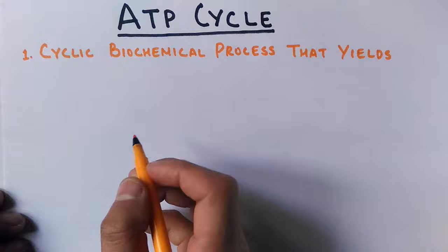Let's find out in this video. So the process where ATP gets used and recycled again is the ATP cycle. First point we see here: it's a cyclic biochemical process that yields ATP from ADP.